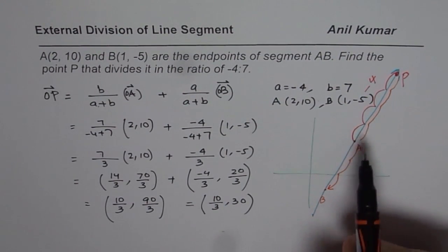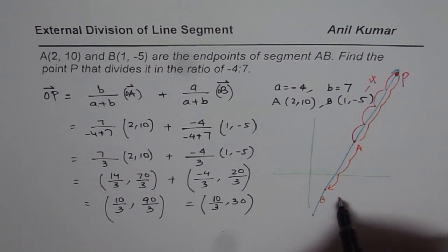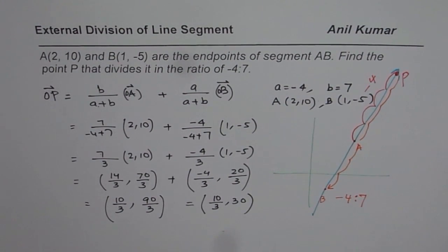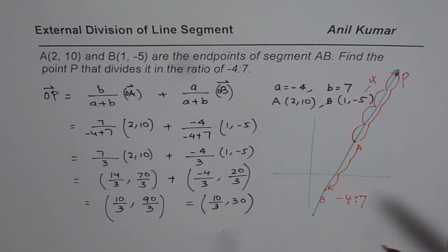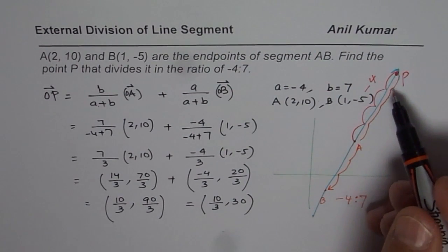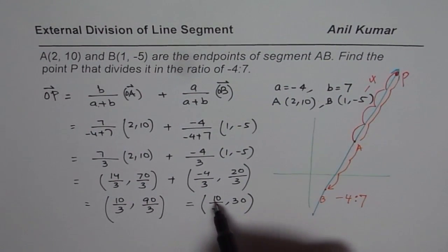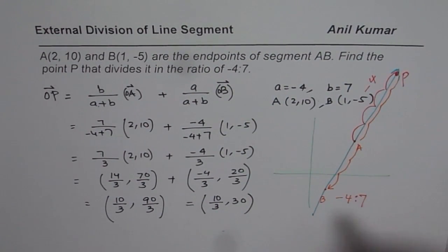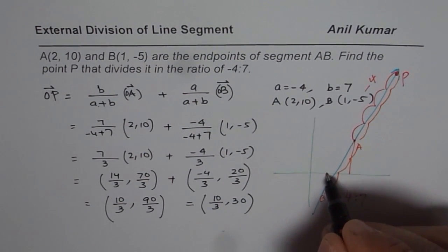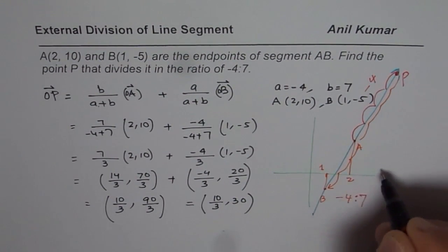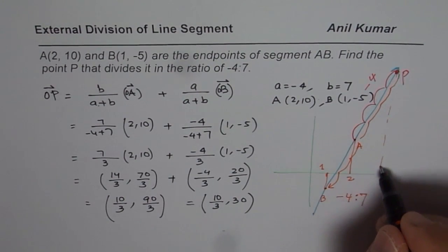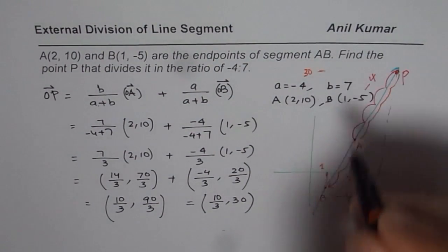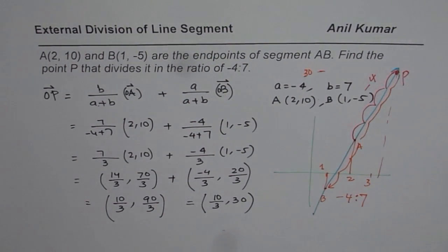Do you see that? So that makes it -4 is to 7. So that is what we are saying, -4 is to 7. So that is the ratio. So that is how we could actually visualize the situation. And what we found here is this point is slightly more than 3. So this point is kind of, you get the point. So this is like 1, this is 2. And this point is somewhere here, 3, somewhere there. And the y value is 30. So that is the solution for the given question.